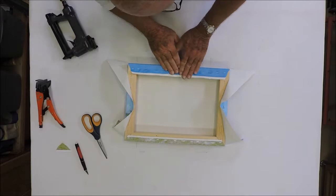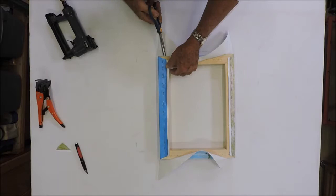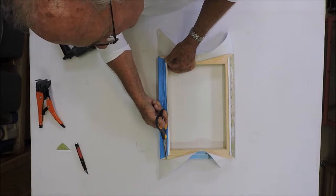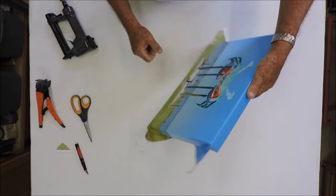Now, because we're going to be wrapping the sides here, I want to get rid of this excess. Again, a nice, sharp pair of scissors is a real definite. We're getting a really tight wrap already. Okay, now here comes the fold.